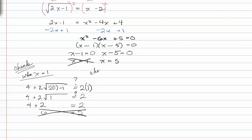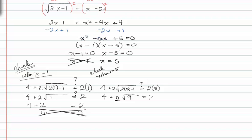Let's try when x is equal to five. We'll have four plus two times the square root of two times five minus one, and we're checking to see if that's equal to two times five. This gives us four plus two times the square root of nine equals ten. Four plus two times three, because the square root of nine is three. So four plus six does indeed equal ten, so this is a good answer. We can take this one.